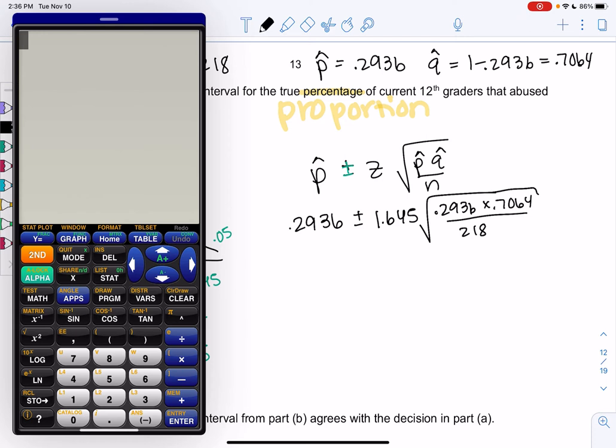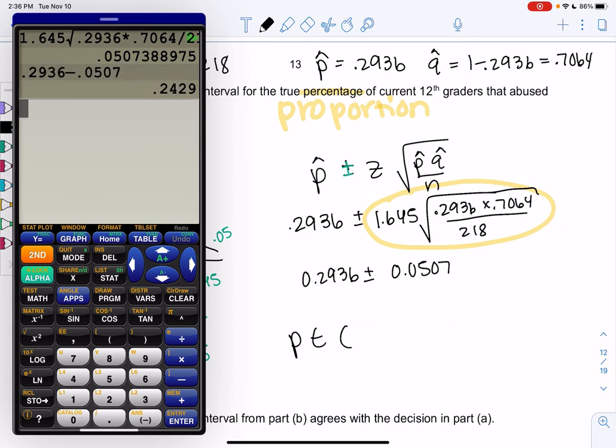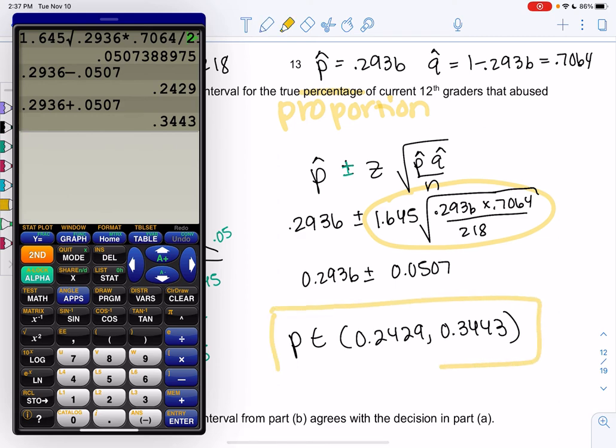So we will get 0.2936 plus or minus 0.0507. Just typing the whole plus or minus piece in your calculator, and then I like to subtract first. We'll say P is in the interval, so P E is in some interval 0.2936 minus 0.0507, so the lower bound is 0.2429 up to 0.2936 plus 0.0507, which is 0.3443. And that's our confidence interval. I'll show you how this gives us the same result.